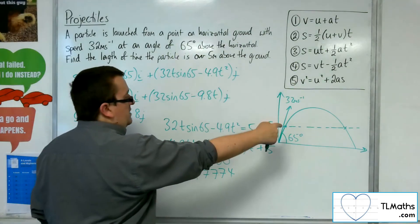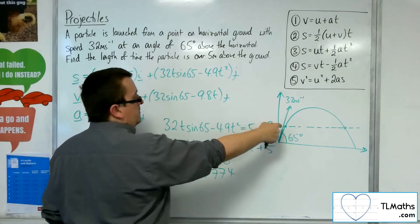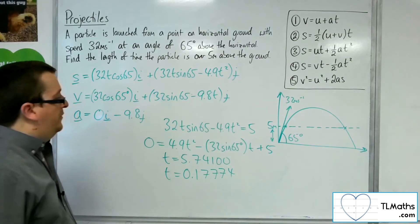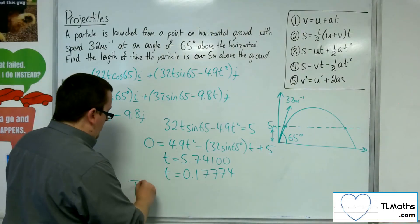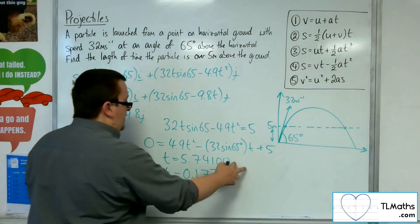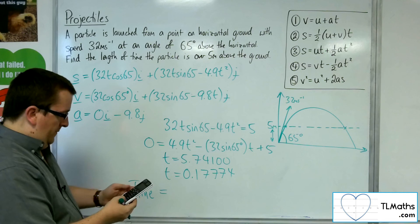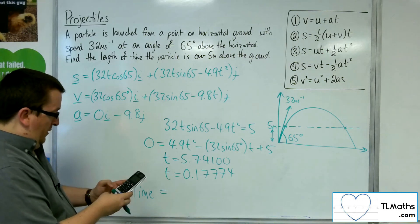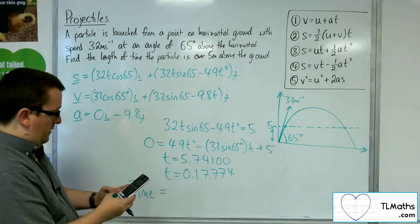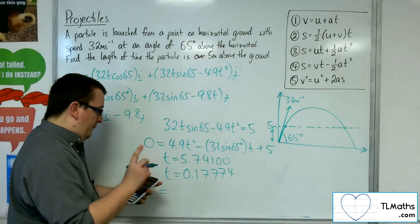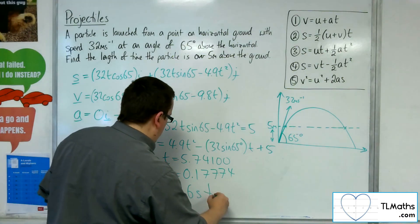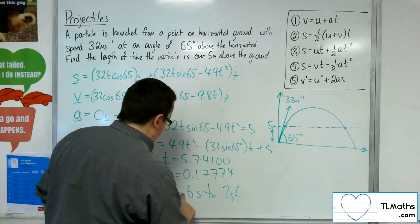So this is the time at which the particle is at 0.17774, and that one is the time when we're at 5.74100. So the time that it's above the 5 metre mark is the difference between those times. That gives me that total time. So we've got the 5.74100, take away 0.17774. And so we get 5.56326, so 5.6 seconds to two significant figures.